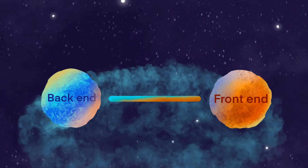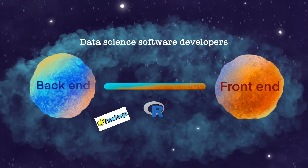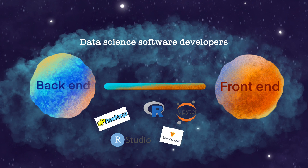Overarching this whole pipeline, we have data science software developers who are not directly involved in the data science pipeline but instead develop software tools that facilitate data science. Examples are developers of Hadoop, R, RStudio, IPython notebooks, TensorFlow, D3, Pandas, Tidyverse, and all kinds of tooling and packages.